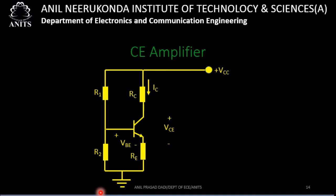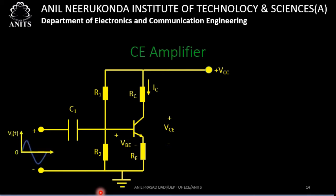Once you have designed the biasing circuit, the task is to use the transistor as an amplifier. You apply the input signal through a coupling capacitor C1. You also use an emitter bypass capacitor CE. The output is taken at the collector through another coupling capacitor C2. The output is found to be an inverted version of the input signal. We will see later why the output is inverted.